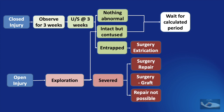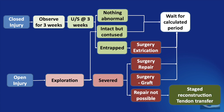Sometimes repair may not be possible, such as in cases of associated skin loss, extensive soft tissue injuries, or when the viability of the nerve ends is not accessible. Once the surgery of extrication, repair, or nerve grafting has been done, we need to wait for the calculated period. In the meantime, we need to put the patient on electrical stimulation or dynamic splinting. If repair is not possible, we need to plan for a staged reconstruction.